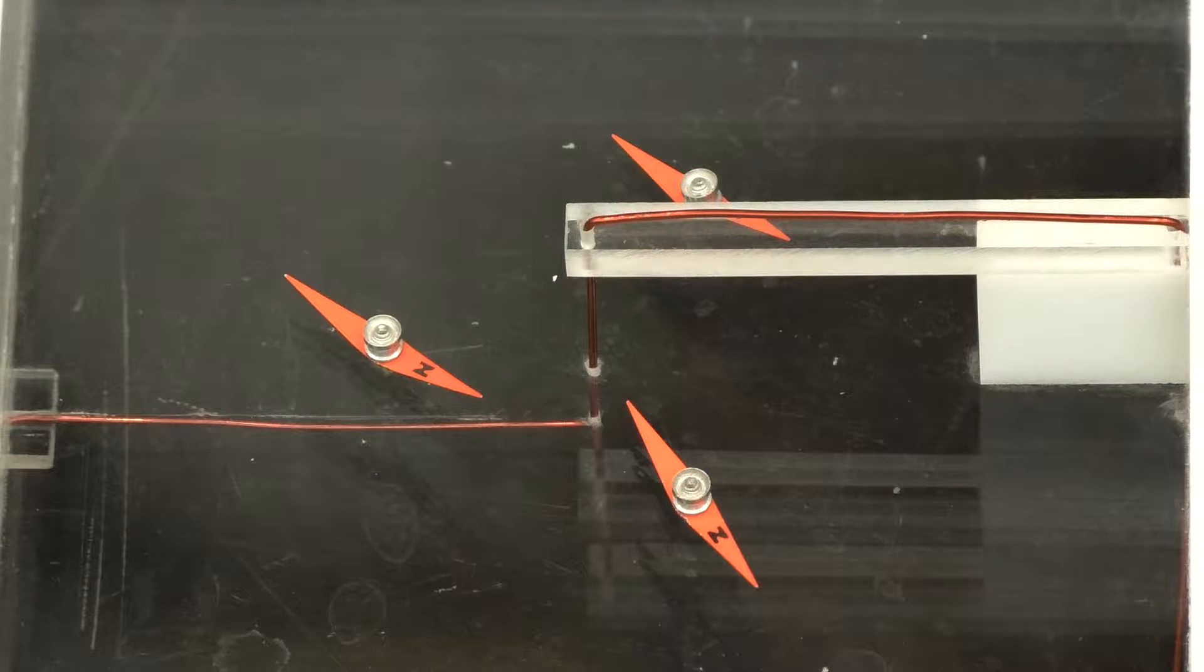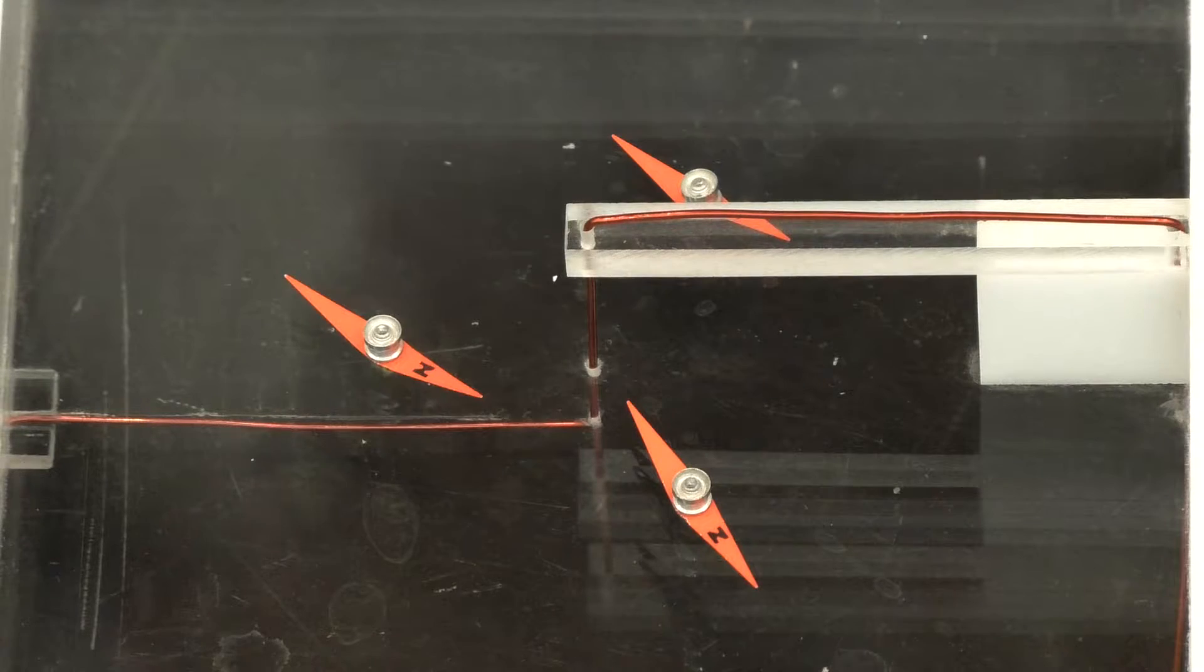This magnetic field is produced by a single wire. If you have a bunch of wires together, for example in the third grade when you wound a wire around a nail, attach the two ends of the wire to a battery, then you could magnetize the nail.